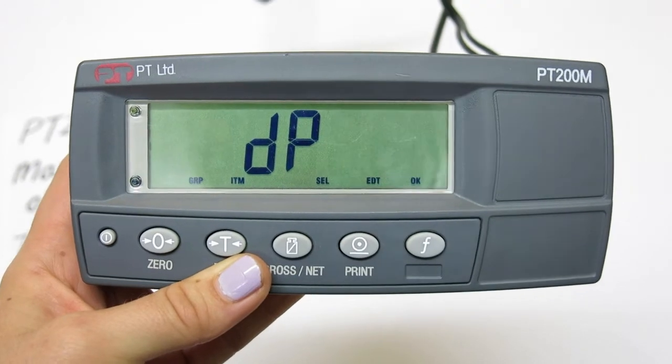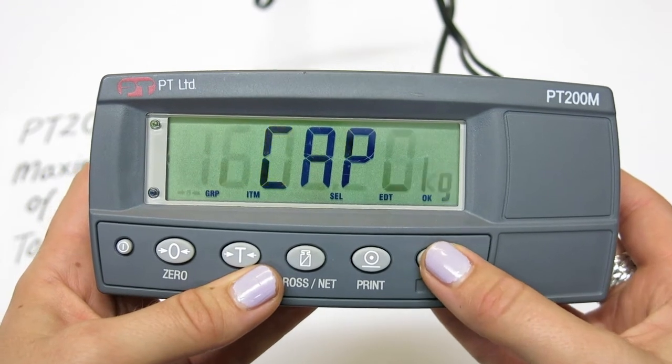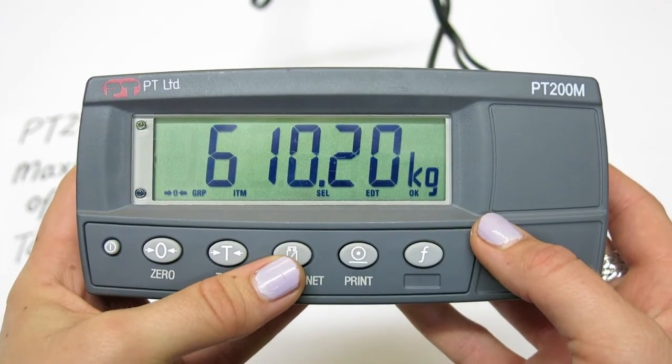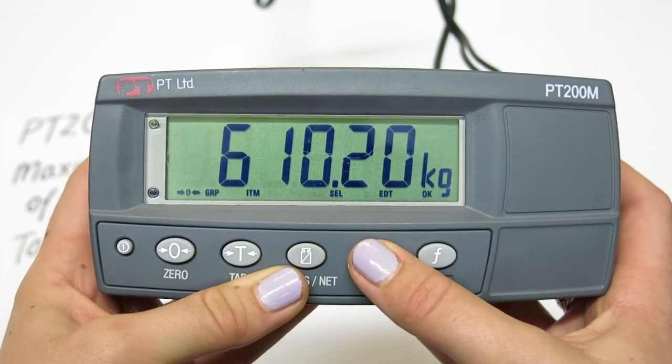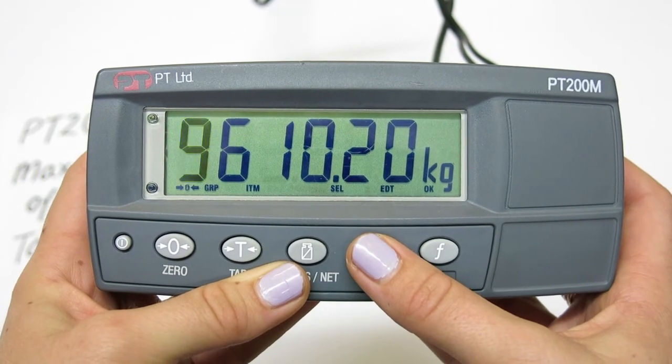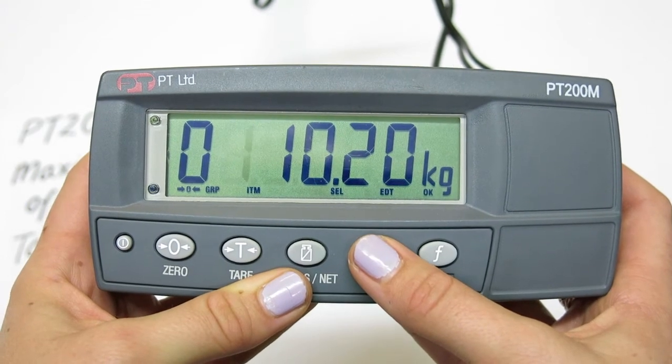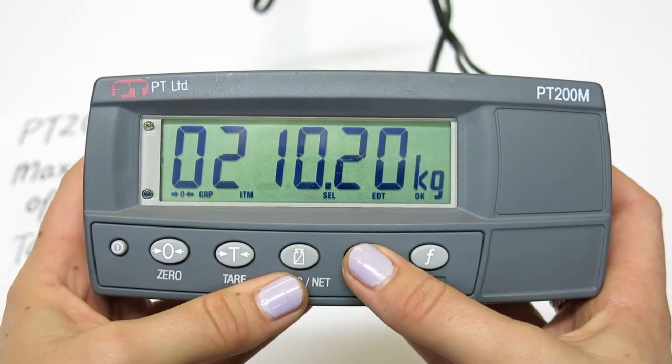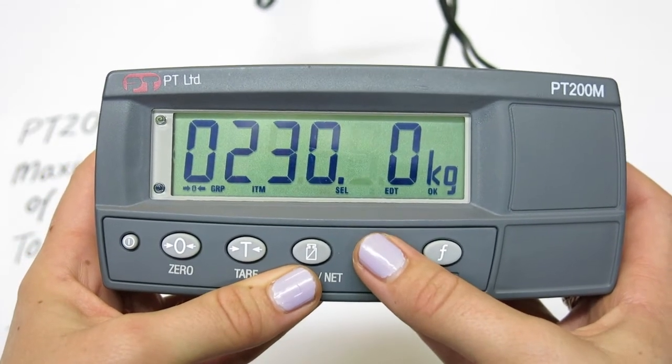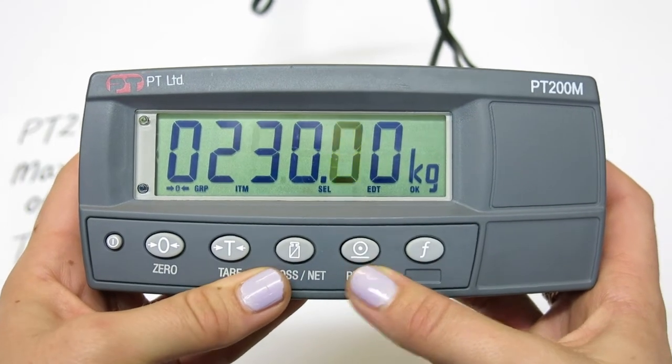The second parameter in the menu is max capacity. Press OK to open. Use the select key to change the position and the edit key to change the digit. Once correct, press OK.